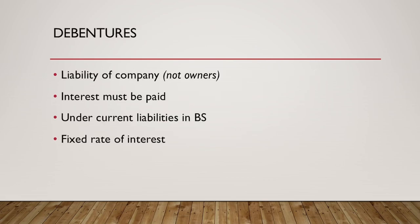Debentures are liabilities of the company because debenture holders receive a certificate for a particular loan — making it a liability for the company. Debenture holders are not owners of the company. The interest must be paid; debentures come under non-current liabilities in the balance sheet, and debenture holders receive a fixed rate of interest.